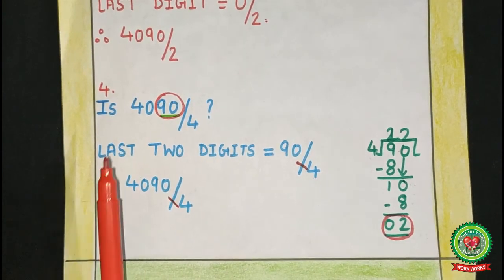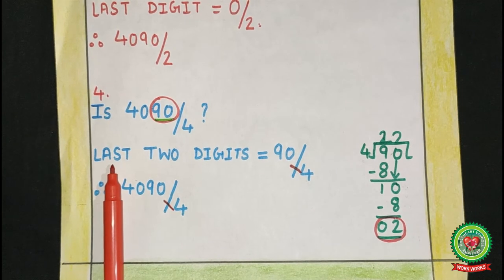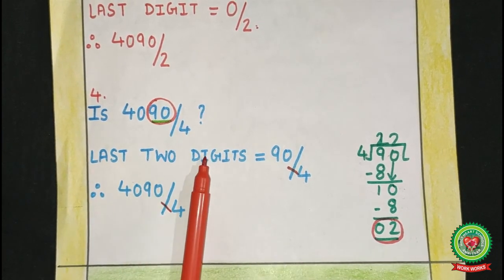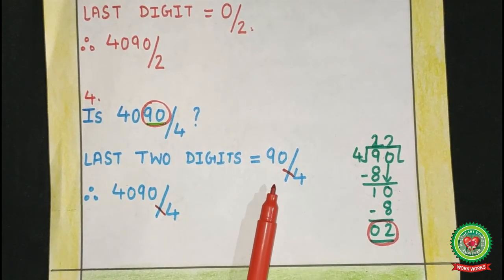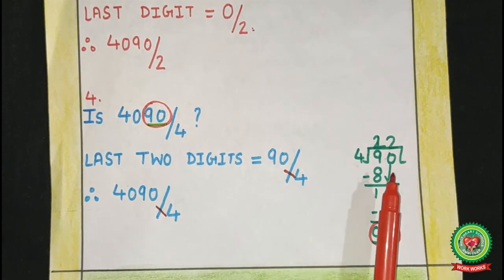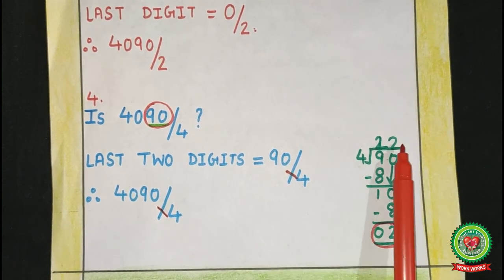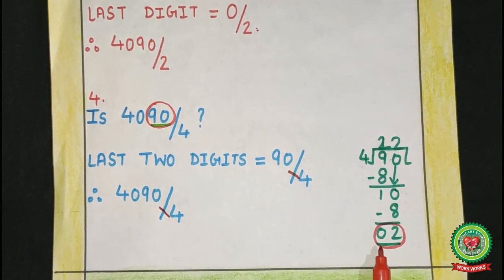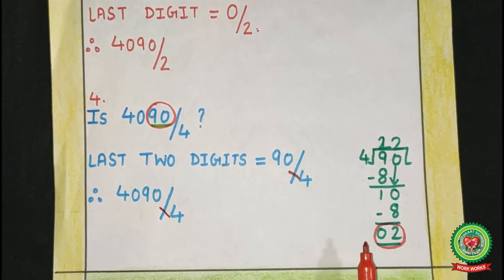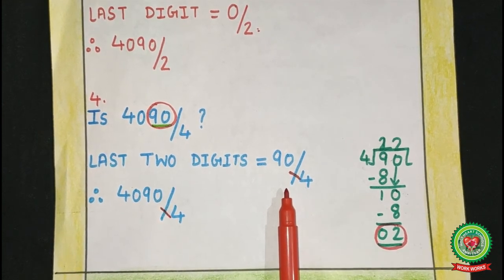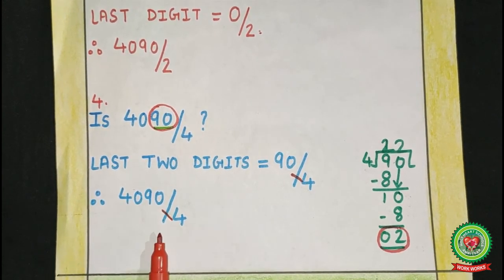Example 4: Is 4,090 divisible by 4? First we have to find the last 2 digits. The last 2 digits are 90. We check whether 90 is divisible by 4 by division. When 90 is divided by 4, the quotient here is 22 and the remainder here is 2. The remainder is not 0, so 90 is not divisible by 4. Therefore, the number 4,090 is not divisible by 4.